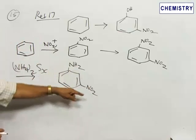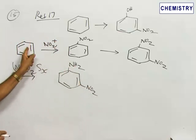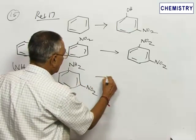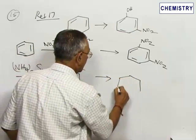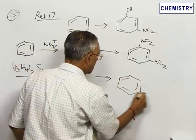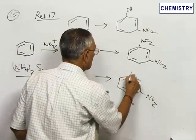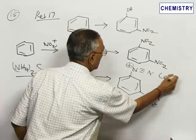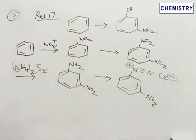We obtain meta-nitroaniline from benzene. When this is diazotized, the amino group is affected but the nitro group remains unchanged. The amino group becomes a diazonium ion, forming a diazonium chloride.